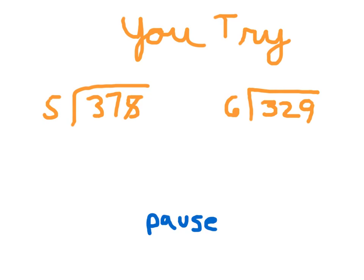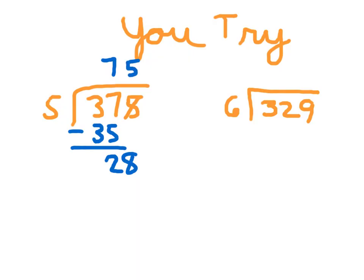For that first problem, 5 cannot go into 3. 5 can go into 37. 7 whole times. 7 times 5, which is 35. 37 minus 35, which is 2. And we bring down the 8. 28 divided by 5 is 5. 5 times 5 is 25. And 28 minus 25 is 3.